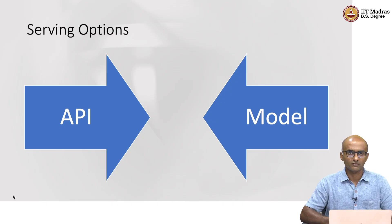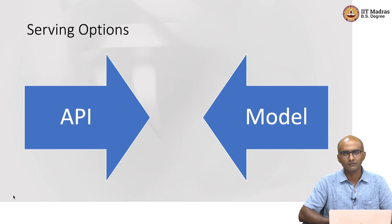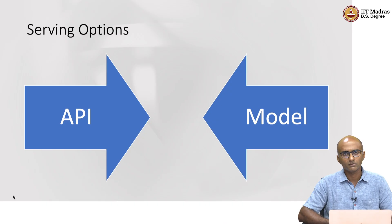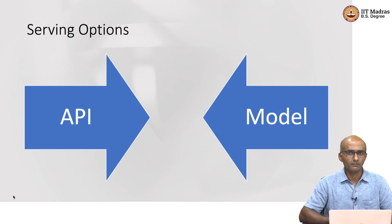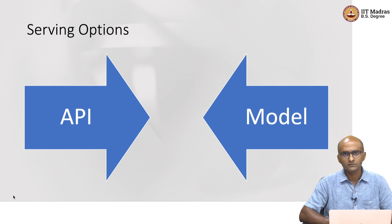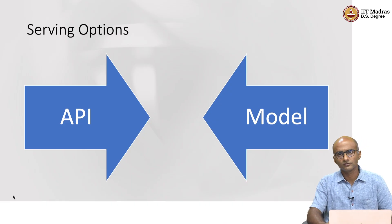Either you serve the model itself directly as a model file — conventionally called a pickle file, or a joblib file in the case of scikit-learn, or something else in Spark — or it's an API, which means the model's inner workings are abstracted away. As a consumer, you only need to worry about invoking HTTP requests using a REST protocol. The API mechanism is quite popular, but it's not the best approach for all scenarios. In certain scenarios, the model file approach is actually way better. We'll break down the various tooling options for each of these two serving approaches.